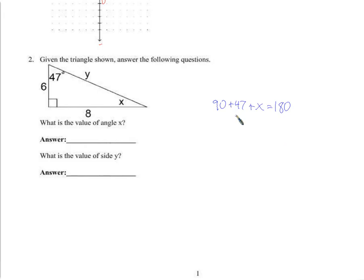So 90 plus 47 plus angle x should equal 180. If we subtract 90 from both sides, we have 47 plus some other angle should be 90 — which some of you maybe did in your head. When we take 47 away from that, x is 43.